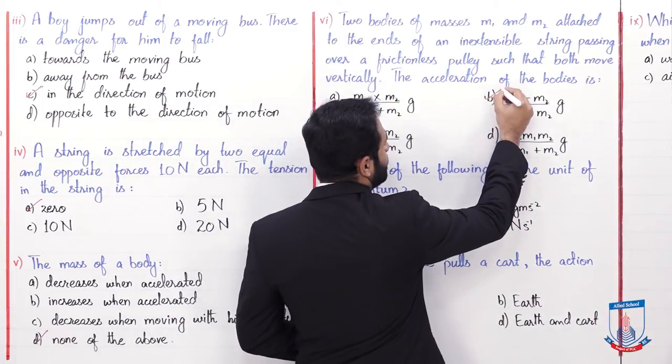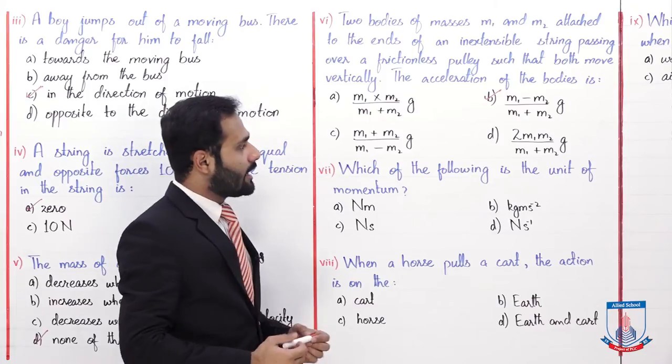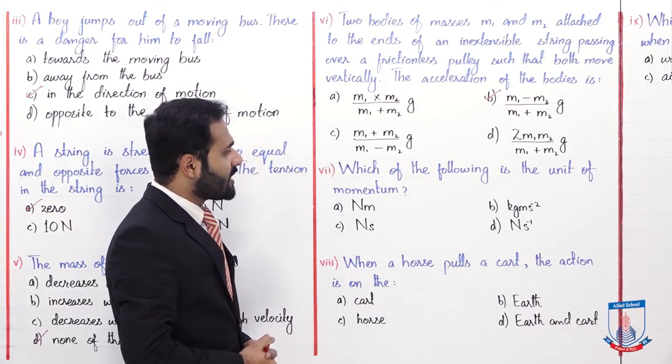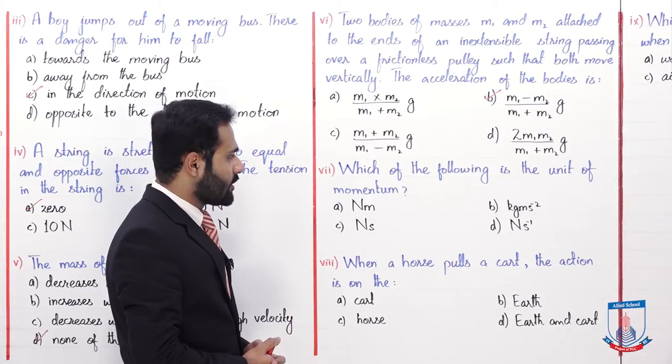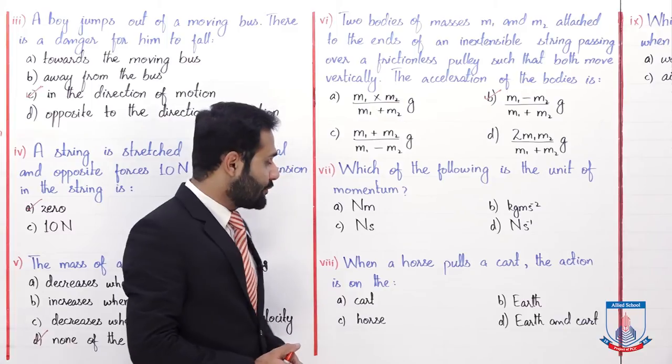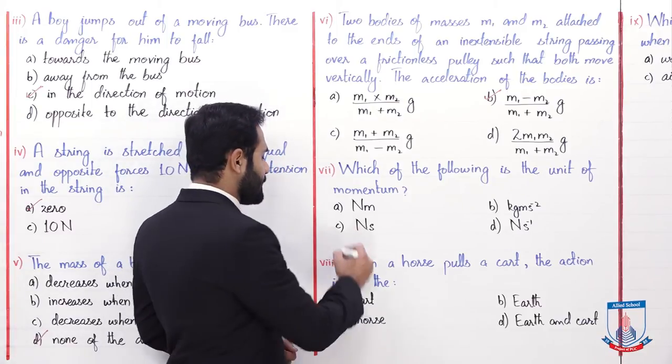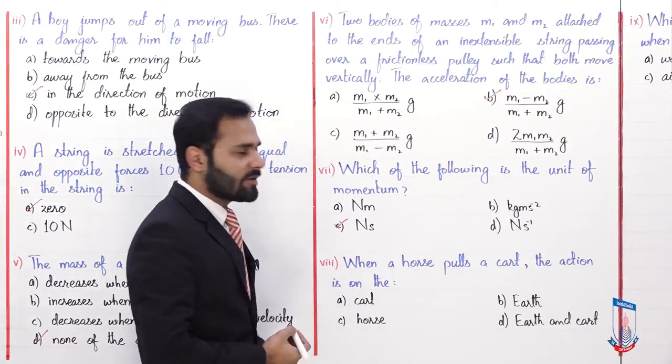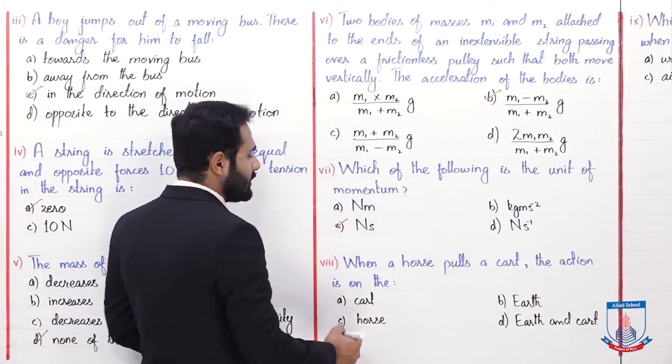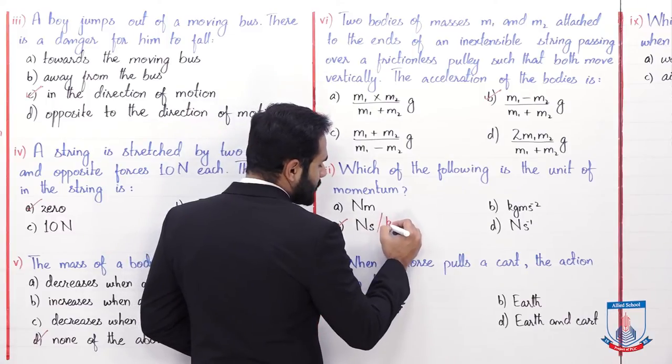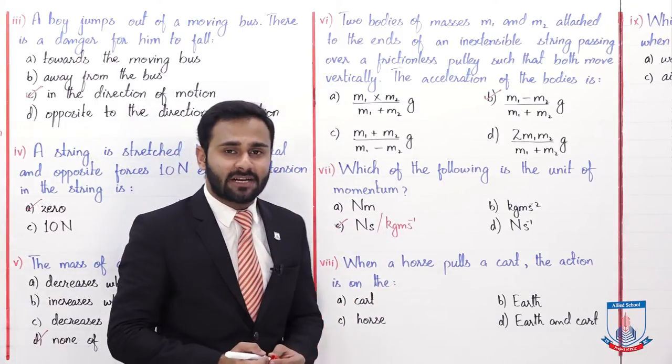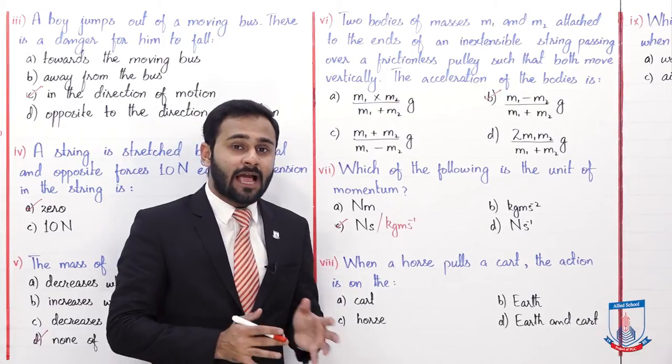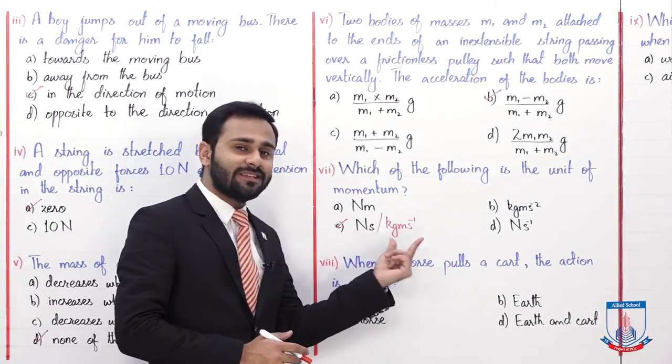And the next: which of the following is the unit of momentum? A newton meter, B kilogram meter per second square, C newton second and D newton per second. The unit of momentum is newton second, so the correct option is C. Another unit of momentum is kilogram meter per second which equals newton second. So in board exams, they may give you this option instead.